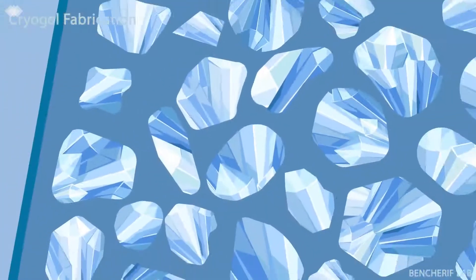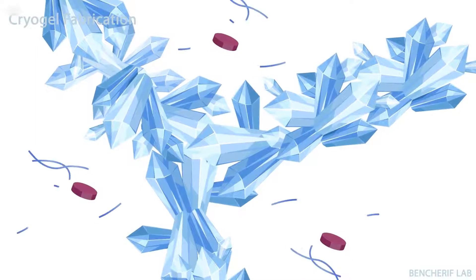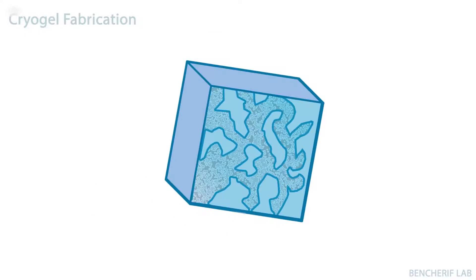The polymer and other solutes concentrate into a non-frozen liquid phase around the solid ice crystals. In the non-frozen liquid phase, the polymer cross-links in a process called cryopolymerization. When the cryopolymerization is complete, the mold is taken out of the freezer.